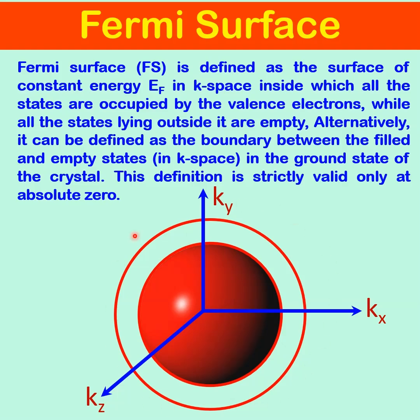We have the momentum space or K-space. K-space is basically the wave vector space, or momentum space, because momentum is connected with the K-vector in the following way: P is equal to h-cross times K. Therefore, K-space is also called momentum space.